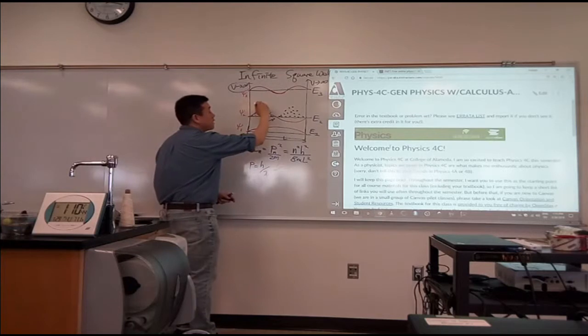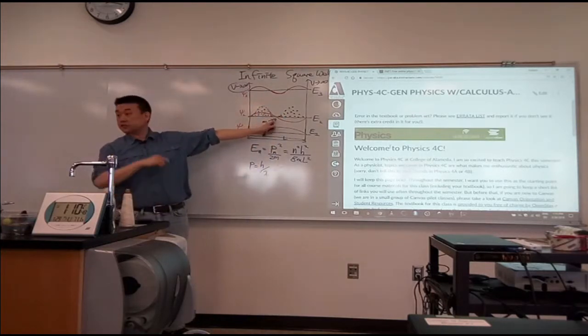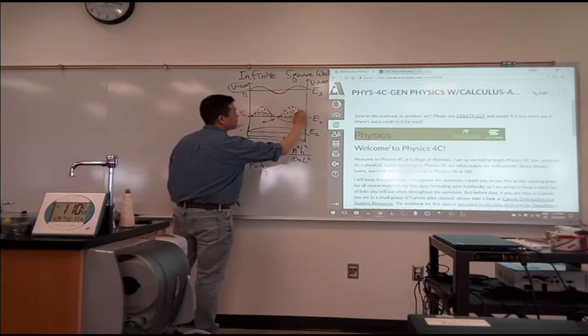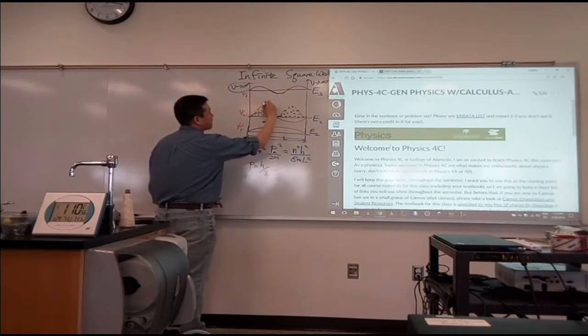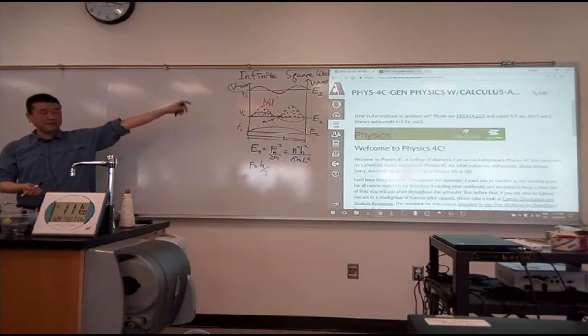And then particle is not likely to be found at all at certain locations. They would be like nodes of the standing wave. And this is represented by the psi epsilon squared, and we talked about last time what that epsilon squared means.